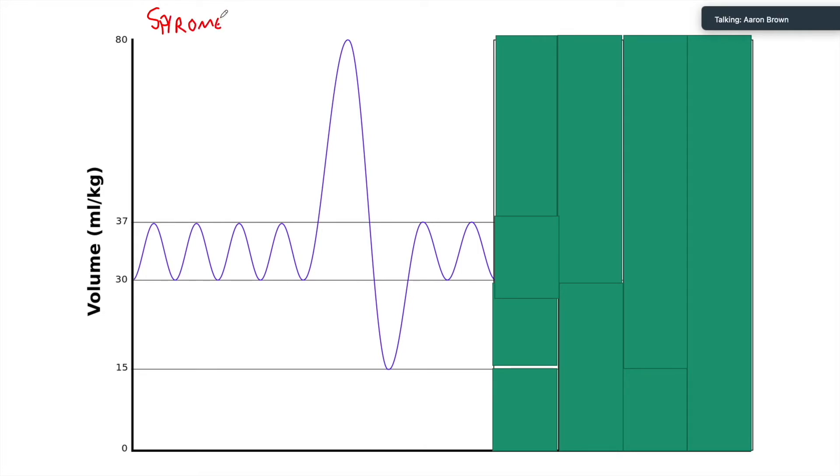Spirometry is really just a measure of how much volume that your patient can move - breathing in, breathing out, taking a deep breath in and exhaling the maximum that they can exhale. That is what we're measuring with spirometry. Now we can only measure what the patient is able to move.